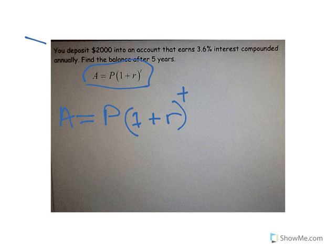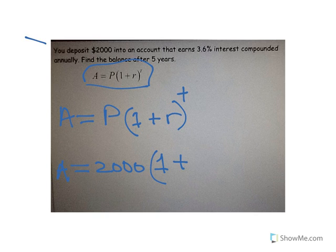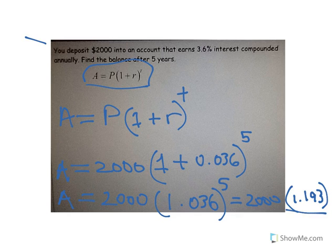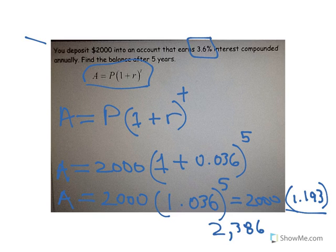You deposit $2,000 into an account that earns 3.6% interest compounded annually. Find the balance after 5 years. The principal is $2,000, the rate as a decimal is 0.036, and the time is 5. So: Account = 2,000 × (1.036)^5. Using the exponent button on your calculator, that equals $2,386.